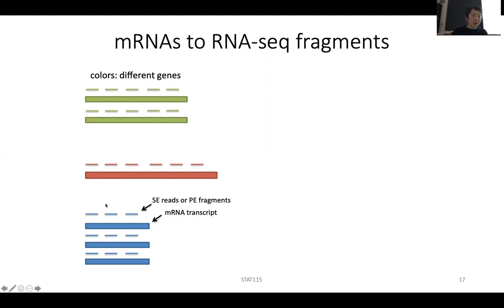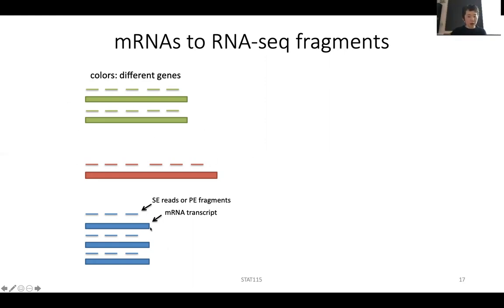Here is just one example — every color is one gene, a different color is a different gene. For example, this gene is making two copies of RNA, this gene is making one copy, this gene is making three copies.